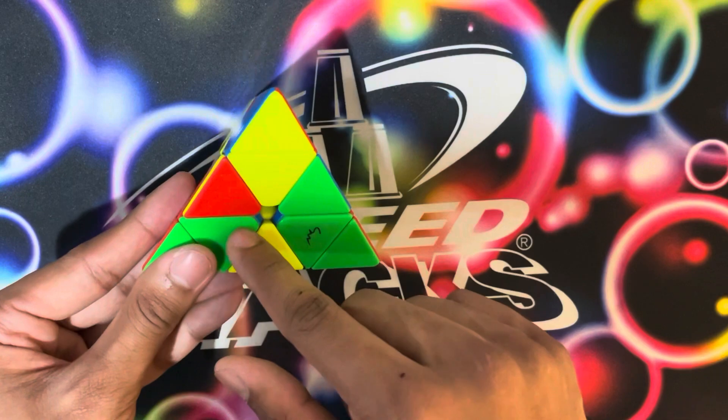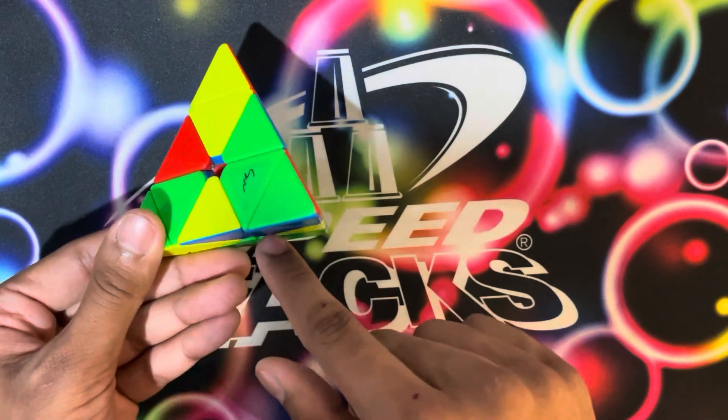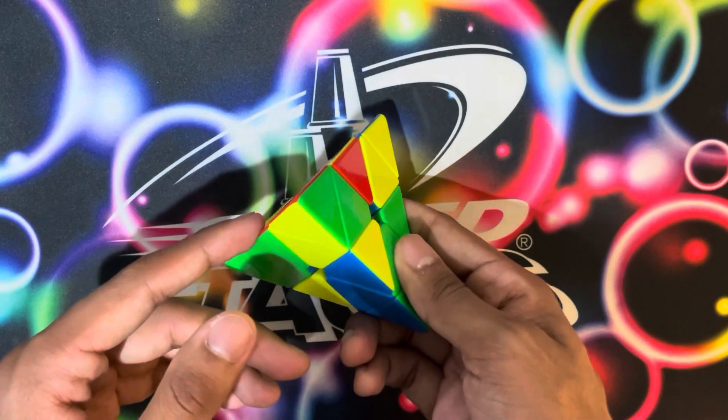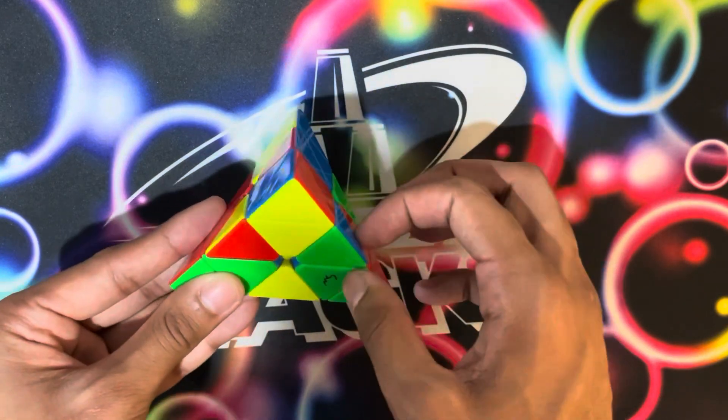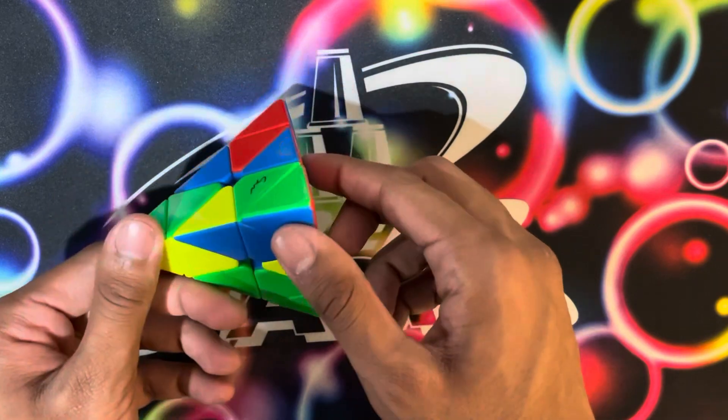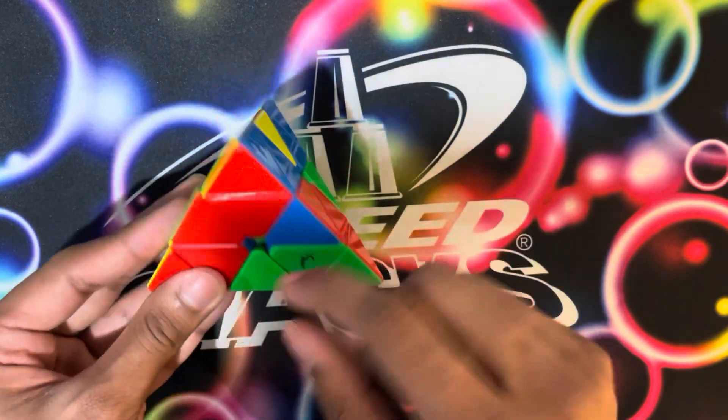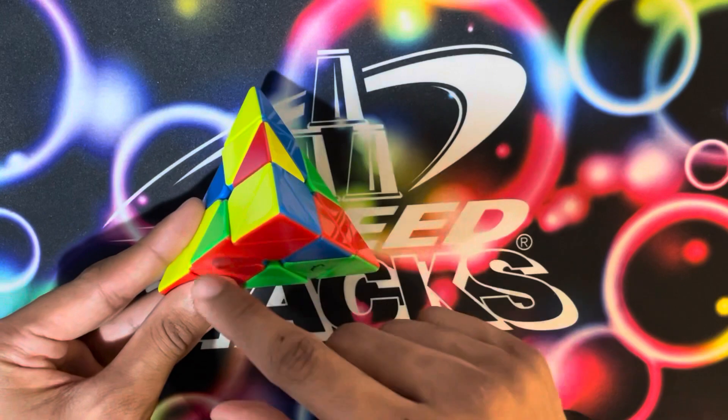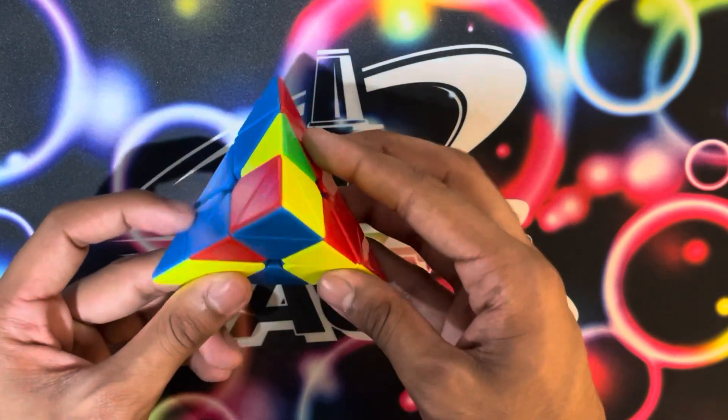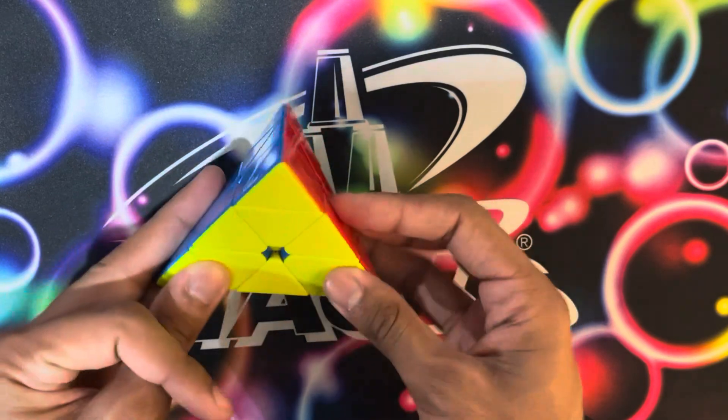So all he has to do is bring the green-blue edge over here, which sets it up in place for when you solve this center, that'll pair up. And then that also brings up the green-red edge so that you can pair it up here. So that looks like this to bring it in position to put it there while solving that center. That edge is right there. And solve the V, rotate, and do L4E.